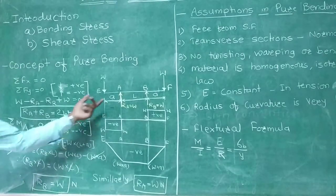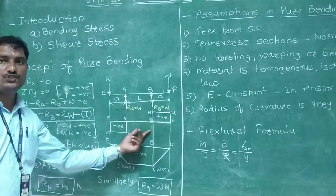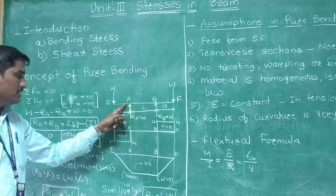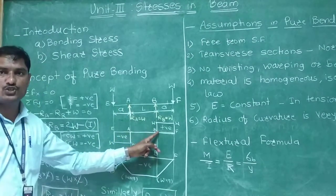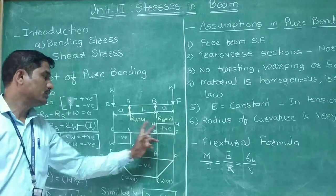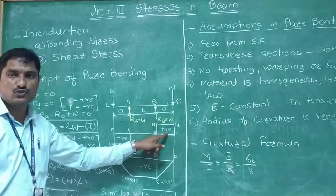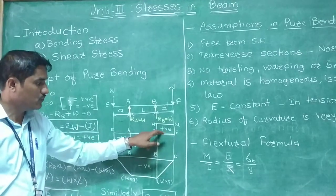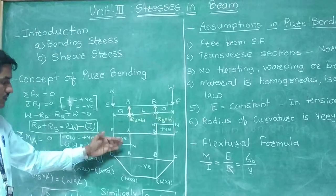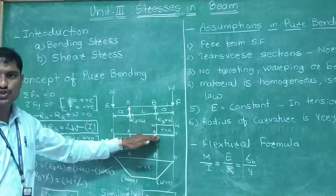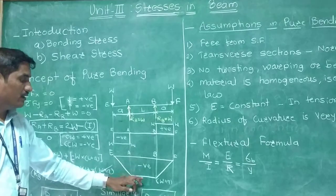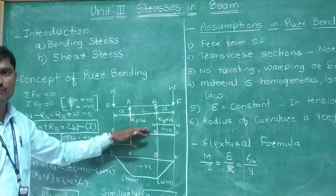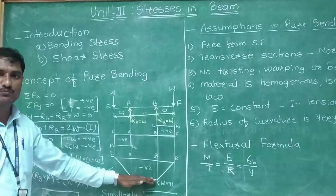From this loading diagram, we can determine the shear force distribution. Since there is no force acting between A and B, that part of the beam is free from shear force. The shear force is negative in the portion EA and positive in the portion BF. Wherever the shear force equals zero, that part undergoes maximum bending moment — this is the concept of pure bending, meaning the bending moment is maximum where shear force is zero.